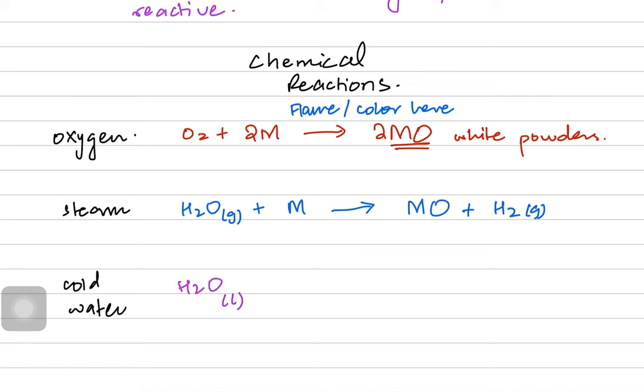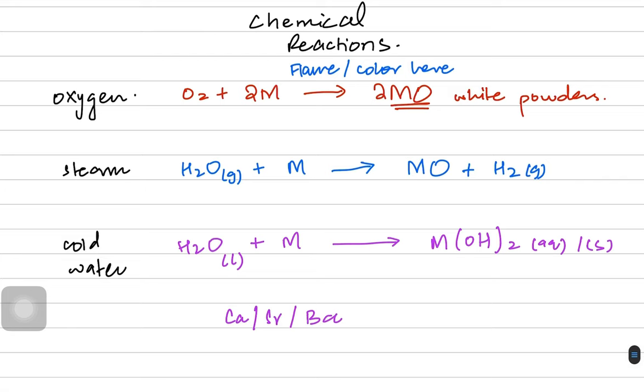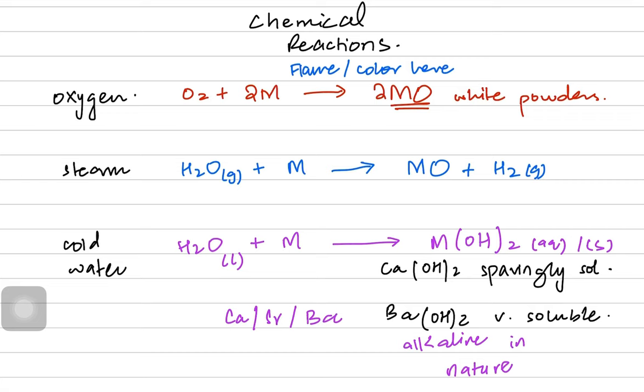Cold water doesn't react with beryllium or magnesium, but reacts with calcium, strontium, and barium to produce metal hydroxide, M(OH)2, in aqueous state. Calcium hydroxide is sparingly soluble, while barium hydroxide is very soluble. These are alkaline in nature, so pH increases as you produce the metal hydroxide.